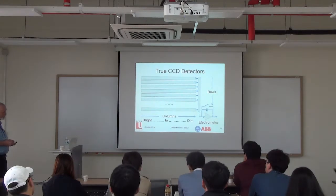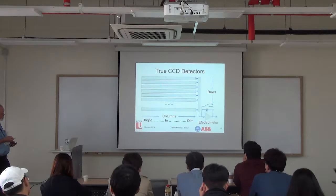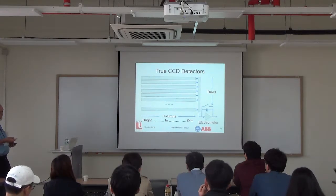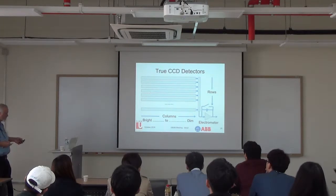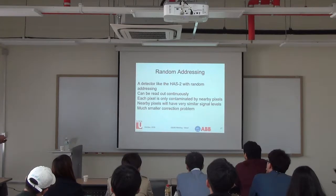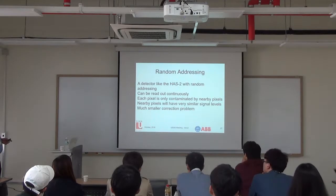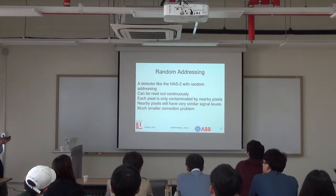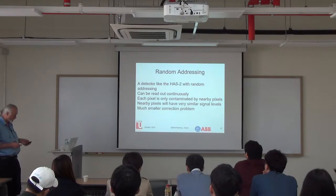More modern detectors use more readouts to reduce overlap compared to original CCD designs. One simple thing is to place the bright end of the spectrum at the right end of the array, reading the dim ones first so they need less correction. Random addressing is helpful—some detector architectures support it, and under high light conditions you can read continuously, taking account of the time at which each pixel was measured. Each pixel is then only affected by its 105 nearest neighbors with similar signal levels, giving a much smaller crosstalk problem than when high gradients cause smearing across the detector.